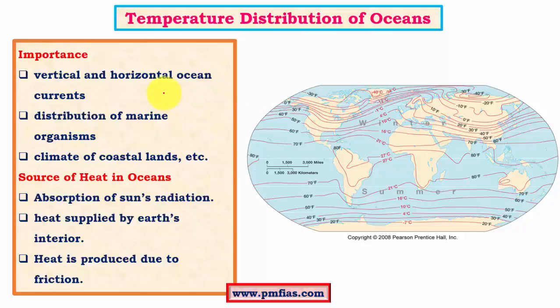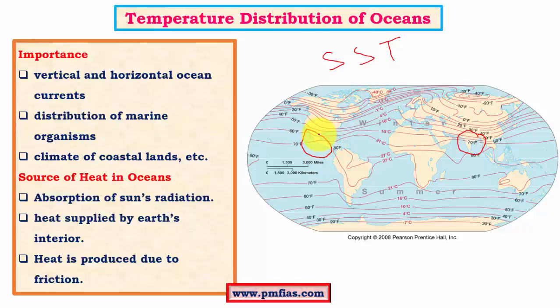We know that the climatology of the entire earth is greatly influenced by ocean waters, especially the climatology of coastal regions. Along with that we have important climatic events like El Nino. El Nino is nothing but a sea surface temperature anomaly, which simply means unusual temperature distribution of the Pacific Ocean in a particular year. This unusual temperature distribution leads to various climatic changes across the world — for example, drought conditions in the Indian subcontinent and increased cyclonic activity in the eastern Pacific region.